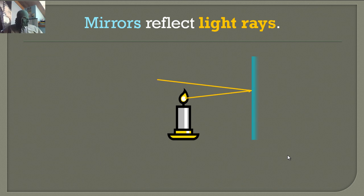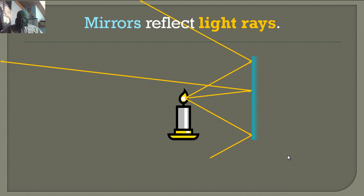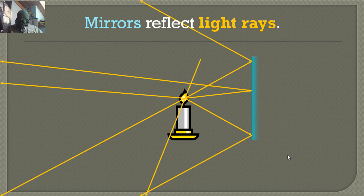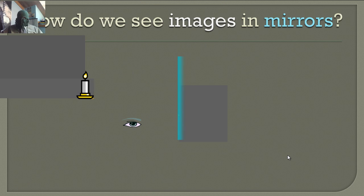Mirrors reflect light rays. It's actually reflecting the light that's bouncing off our face, hitting the mirror, and we're seeing that image. So how do we see images in mirrors?